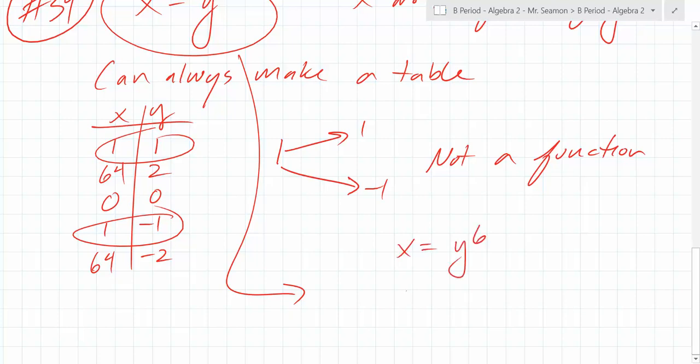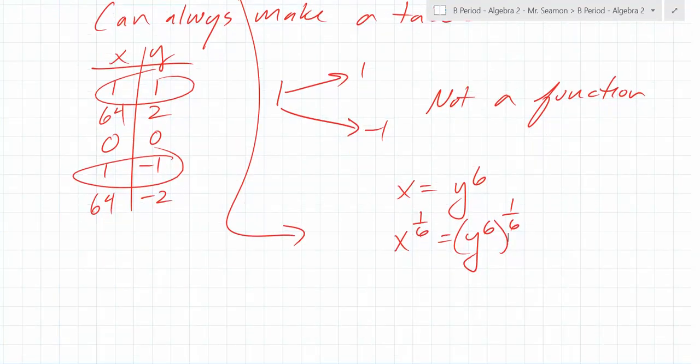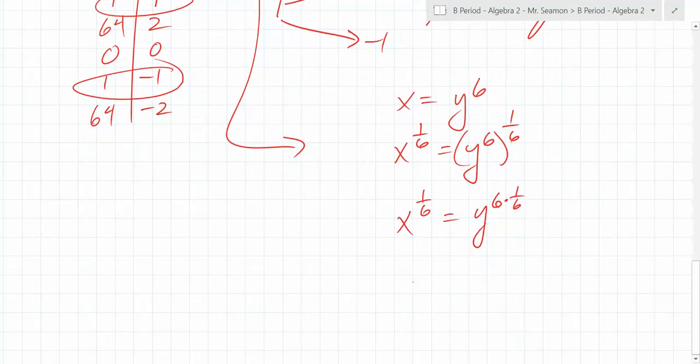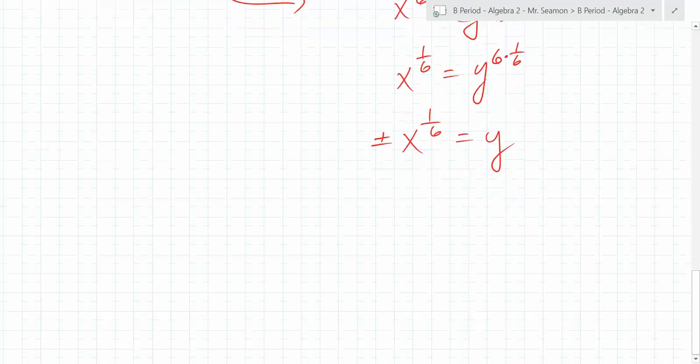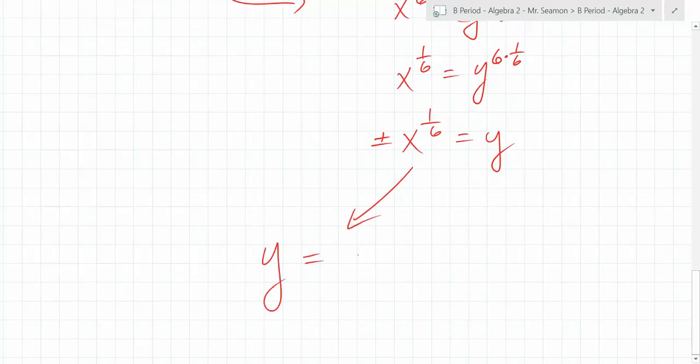X equals Y to the sixth. That's X to the one sixth equals Y to the sixth. I've raised both sides to the same power. Again, you don't need to memorize this. When you have powers of powers, do you know what you do with powers of powers? What do you do with the six and one sixth? Anybody want to guess? You multiply them. So this becomes X to the one sixth equals Y to the sixth times one sixth. Well, what's six times one sixth? So you have X to the one sixth equals Y. When you take an even root, you have to do plus or minus. This is another thing you don't need to know. Just I'm going to show this to you. So if you want to graph this, you have to graph Y equals plus or minus X to the one sixth. Again, you don't need to know this. This is just a bonus thing. So you have to graph X to the one sixth and you have to graph negative X to the one sixth.